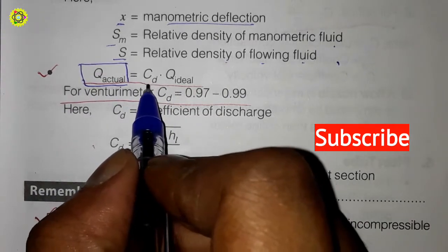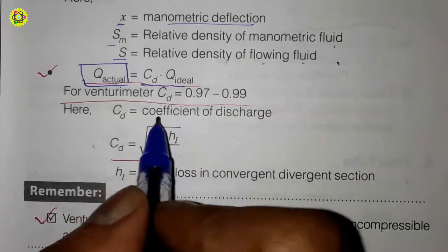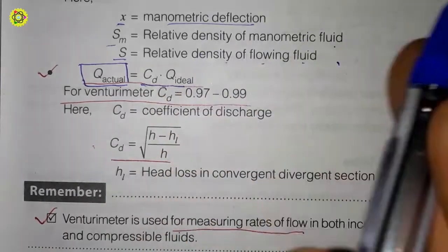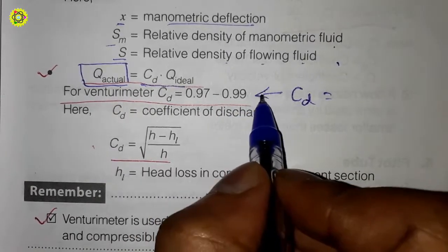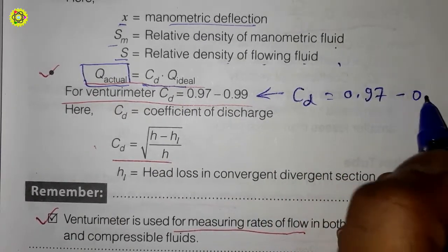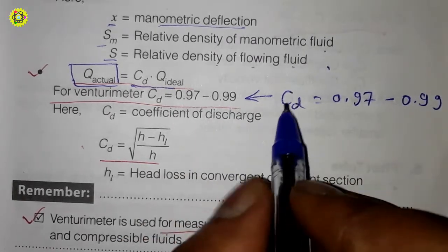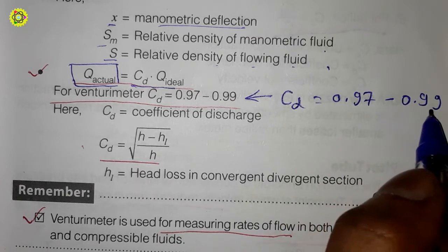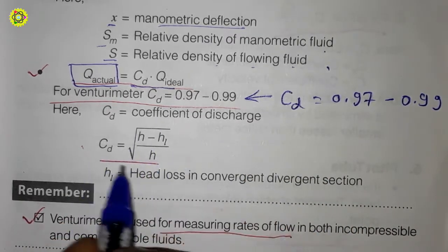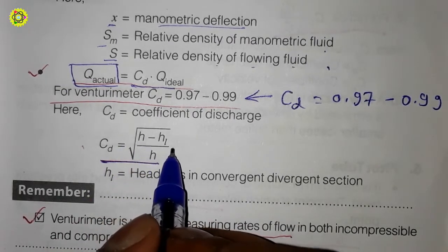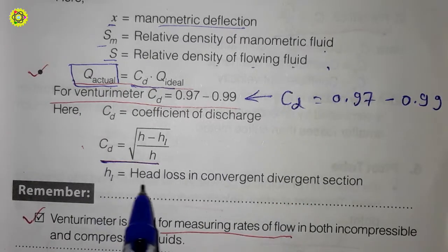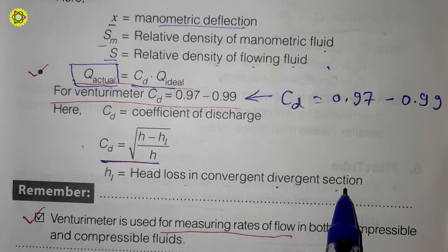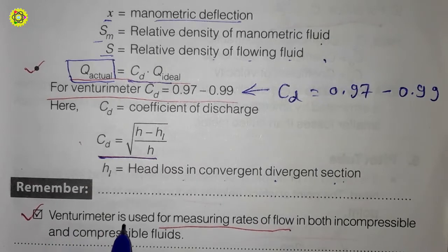The actual discharge Q_actual = Cd × Q_ideal, where Cd is the coefficient of discharge. For a venturimeter, Cd is always in the range of 0.97 to 0.99. The coefficient of discharge is given by: Cd = √((h − hL) / h), where h is the piezometric head difference and hL is the head loss in the convergent-divergent section.